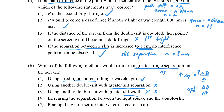Using a double slit with greater slit width does not change fringe separation, since slit width is not related to slit separation. Increasing the distance between the light source and the double slit is also not relevant. If the apparatus is placed in water, the wave speed decreases, so the wavelength decreases, and fringe separation will not increase.